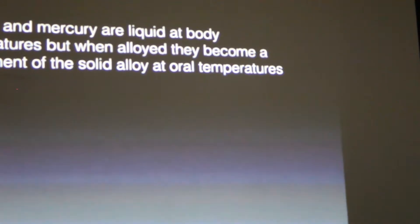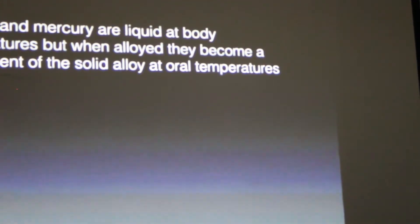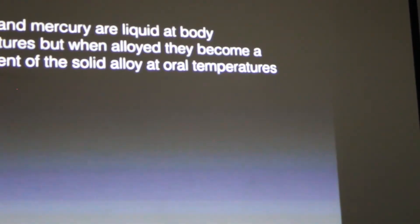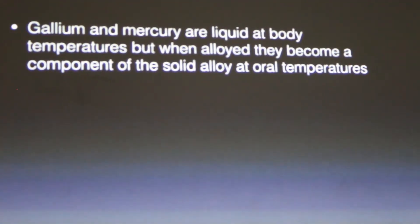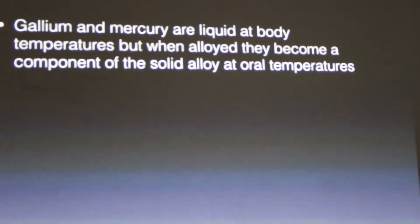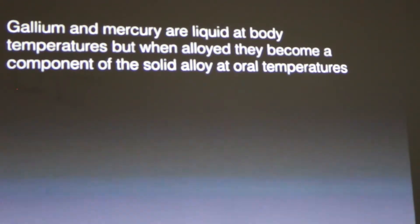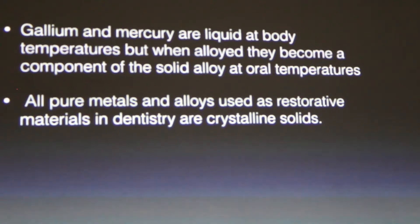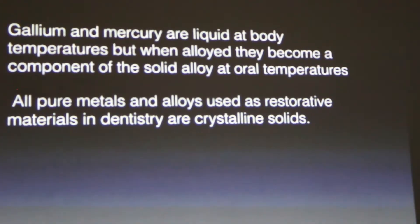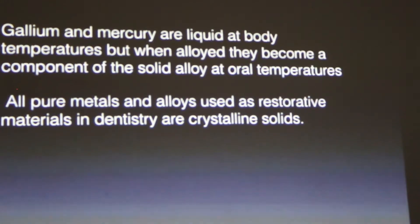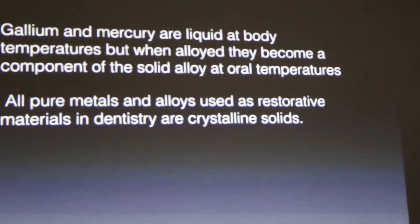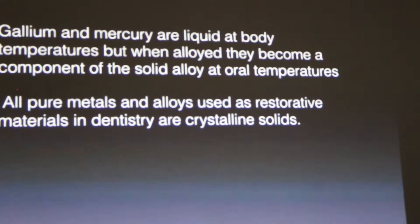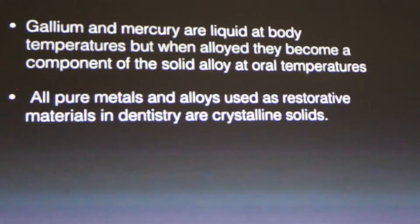Gallium and mercury are liquid at room temperature, but when alloyed, they become a component of a solid alloy at room temperature. Some metals are liquid at low temperatures, such as gallium and mercury. All pure metals and alloys used as restorative materials in dentistry are crystalline solids, which have high strength.